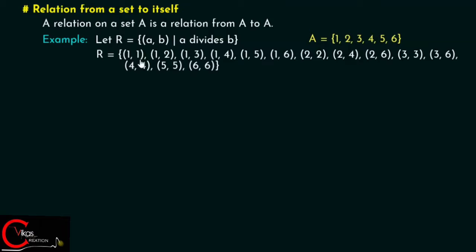The resulting relation R includes: (1,1), (1,2), (1,3), (1,4), (1,5), (1,6), (2,2), (2,4), (2,6), (3,3), (3,6), (4,4), (5,5), (6,6). These ordered pairs are included in R because the first element in each ordered pair divides the second element.